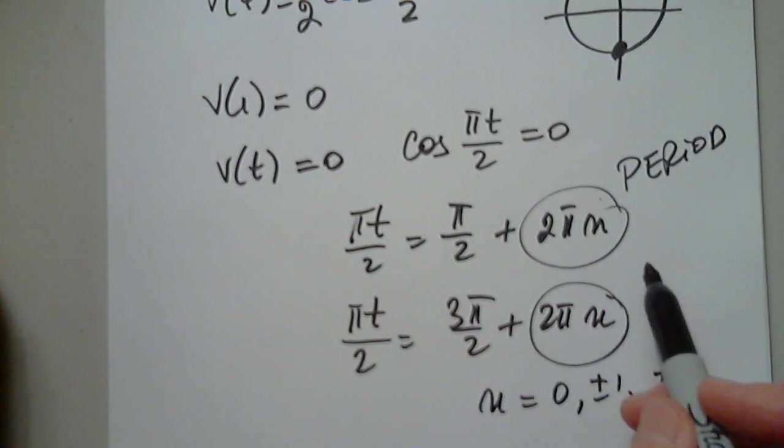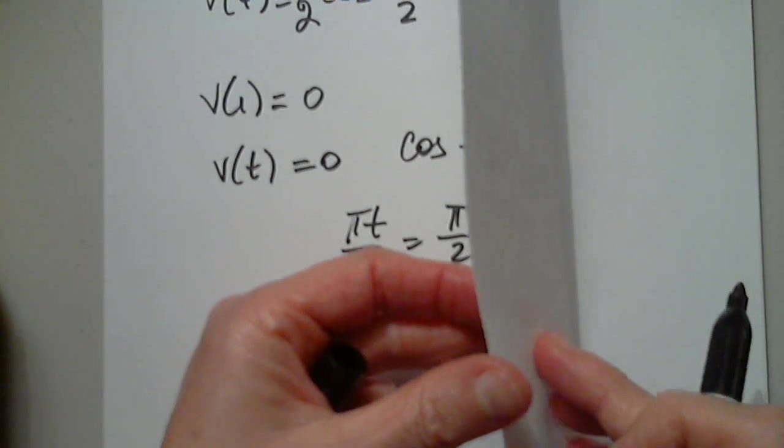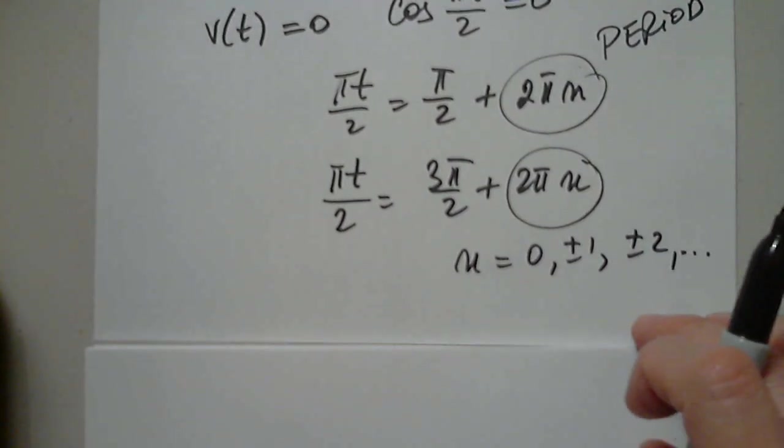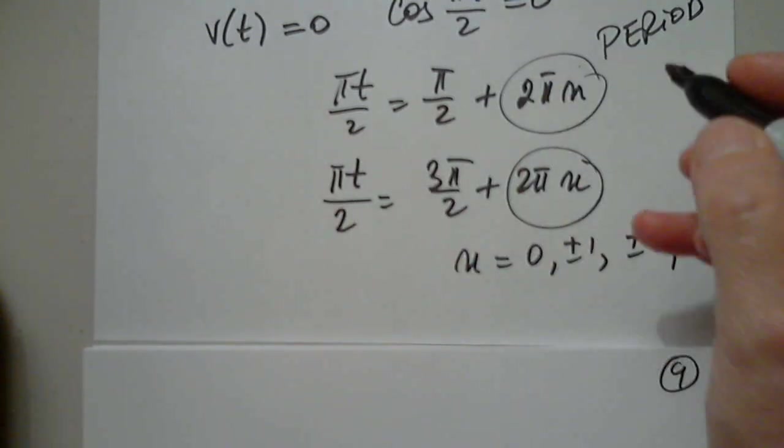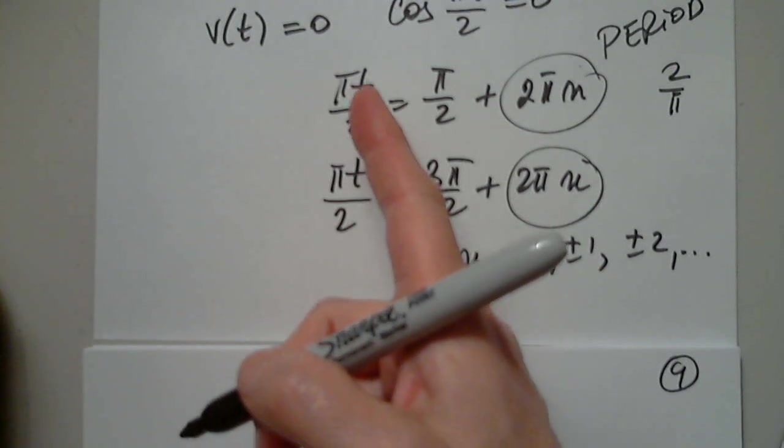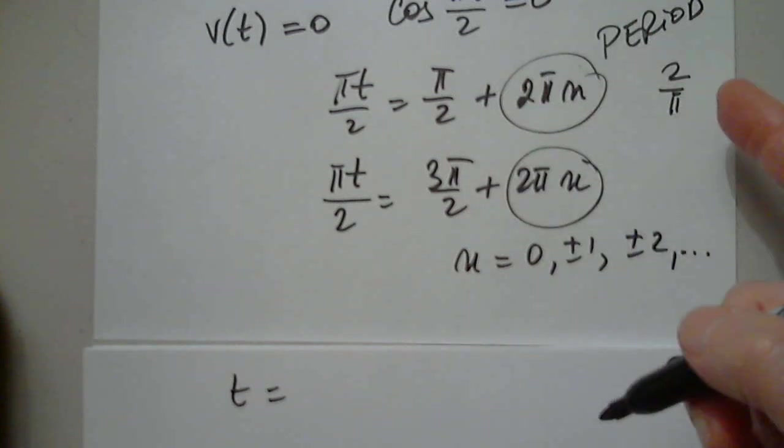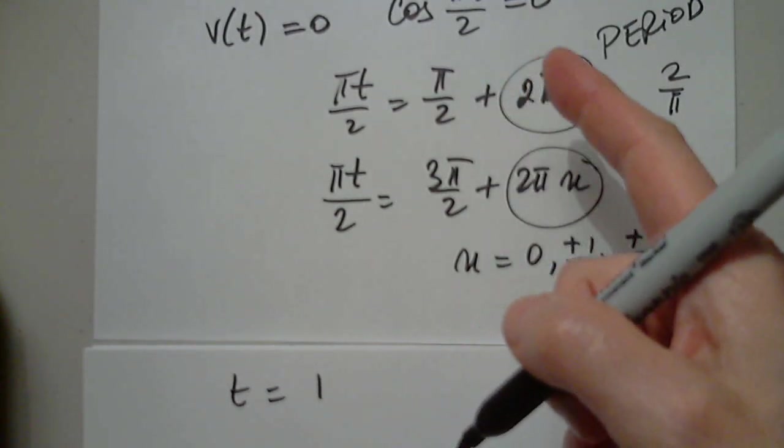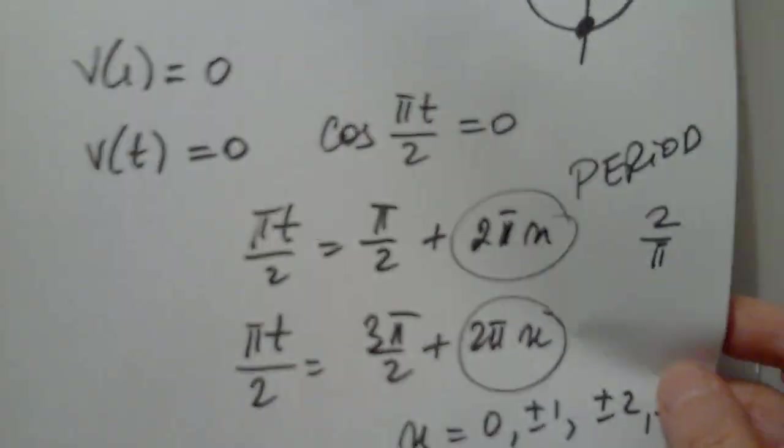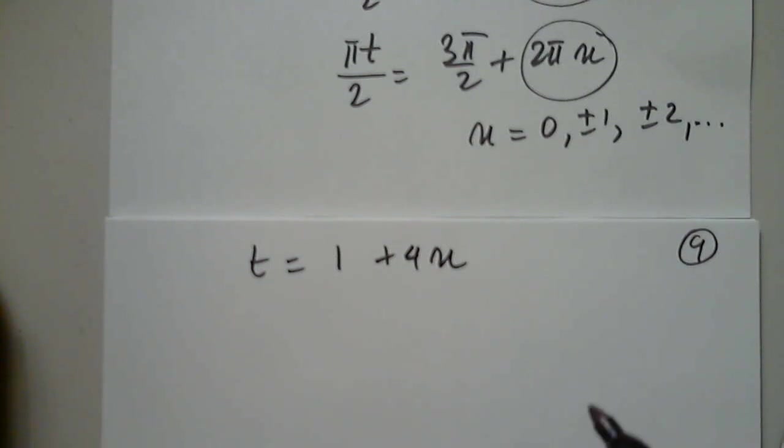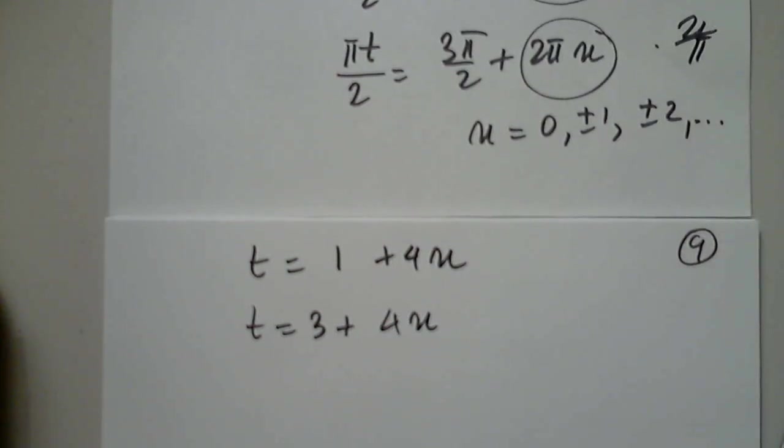But we have to solve for t. So this is not done. I have to multiply everything by 2 over pi. So pi over 2 times 2 over pi will be 1. 2 pi, the pi will go away, so this will be plus 4 n. The same thing with the second option. So t equals 3 plus 4 n because I'll multiply by 2 over pi as well.